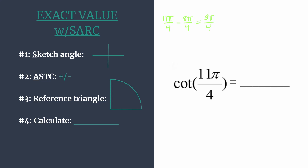Rotating counterclockwise, we have 0, and pi is a rotation halfway around. Let's count by quarters: 1/4 pi, 2/4 pi, 3/4 pi. So 3 pi over 4 — that terminal side will be right here in the second quadrant.